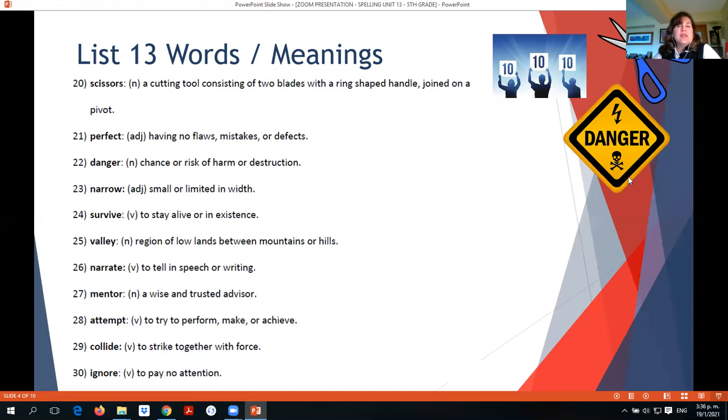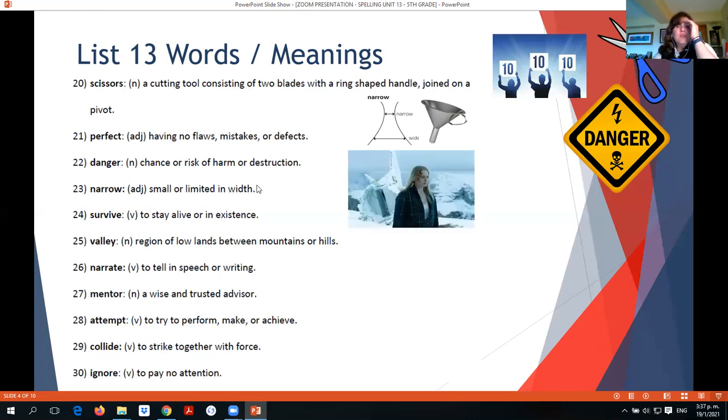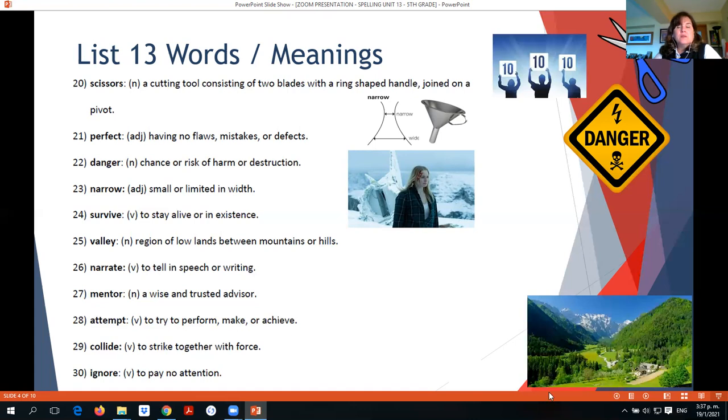Danger. Danger is a chance or risk of harm or destruction. Usually, you can find these type of signs near a source of danger to warn you. Narrow is small or limited in width. For example, a funnel. A funnel has a wide opening on one side and a narrow opening on the other side. Narrow, wide. Survive means to stay alive or in existence. For example, when somebody survives a plane crash, this girl survived this accident. So she's a survivor. She survived. Valley. A region of lowlands between mountains or hills. You know this from science.